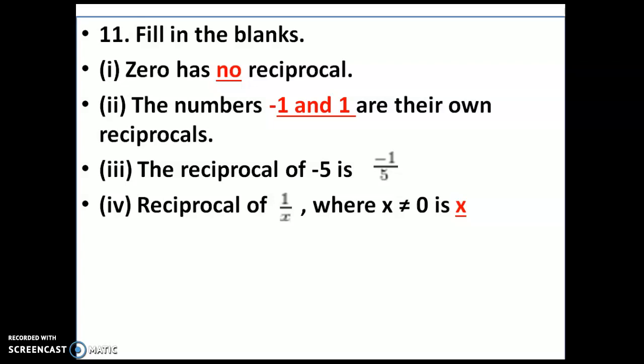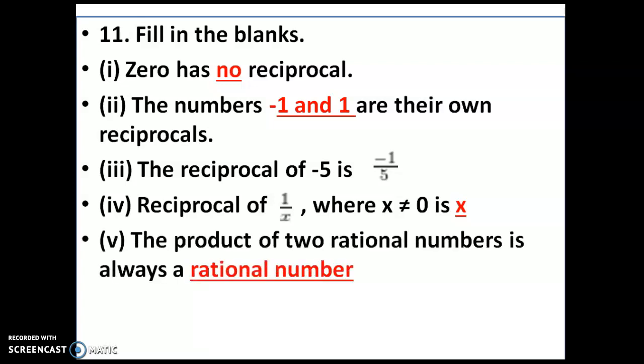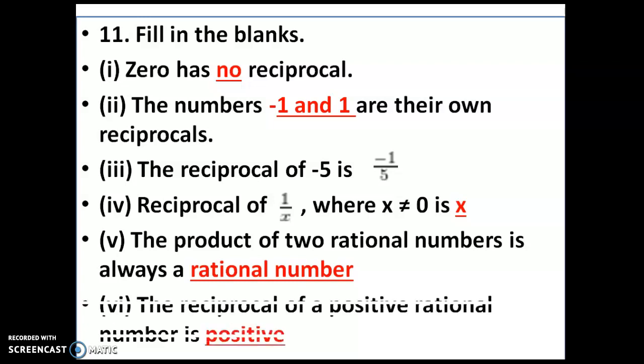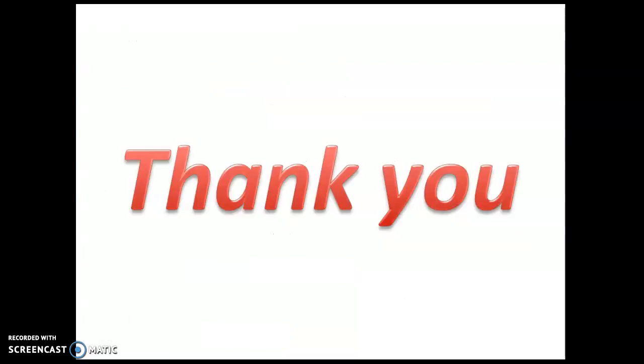Fifth: the product of two rational numbers is always a rational number — when you multiply two rational numbers, the resulting answer will be a rational number. Sixth: the reciprocal of a positive rational number is positive.